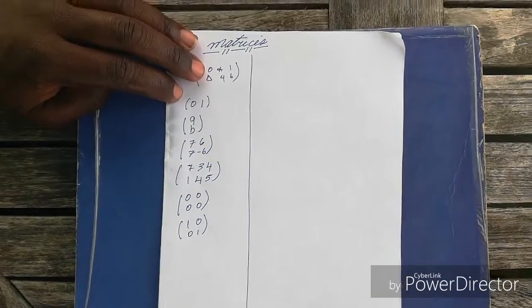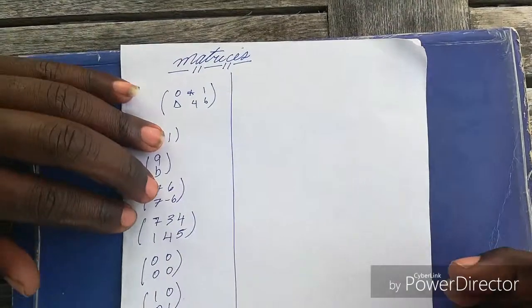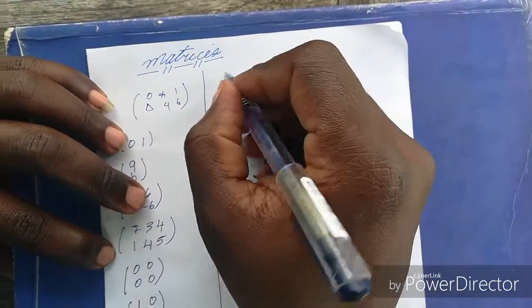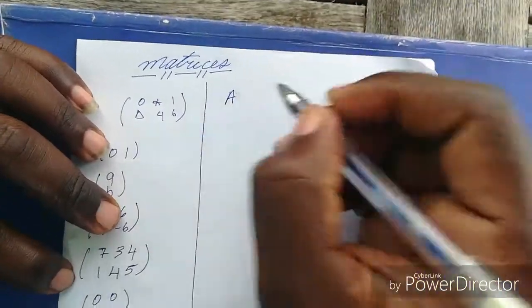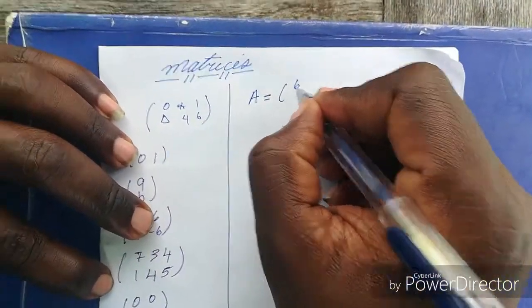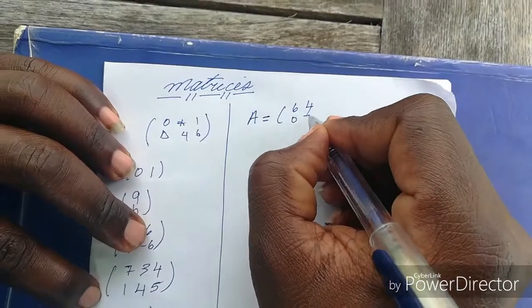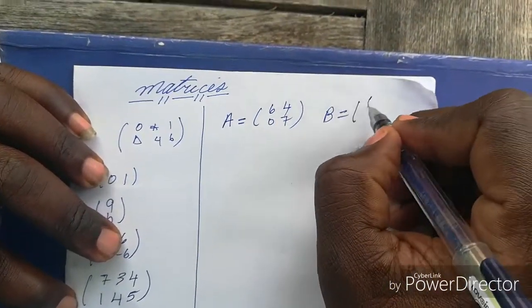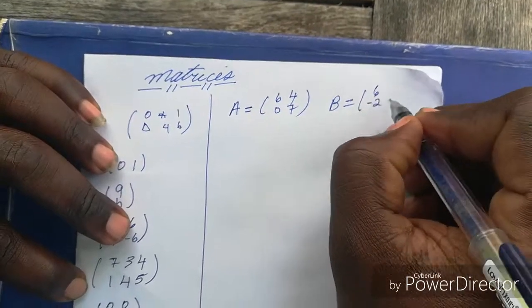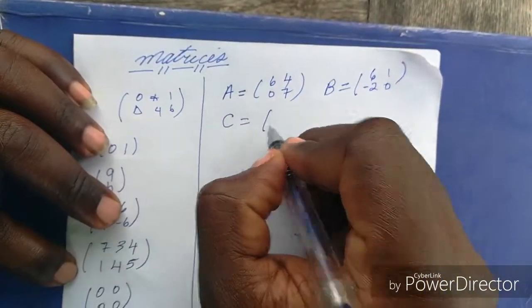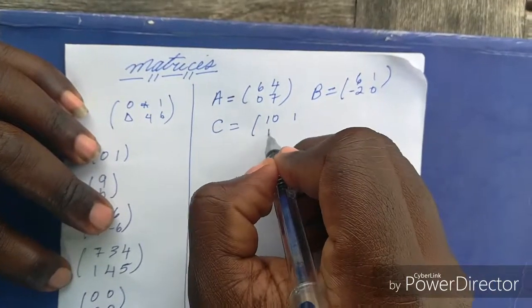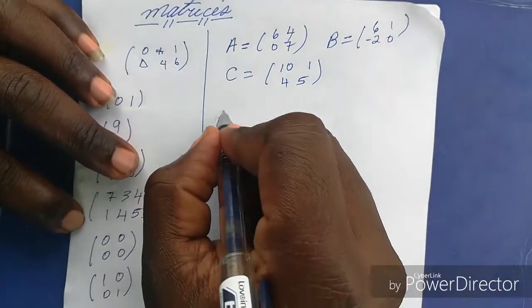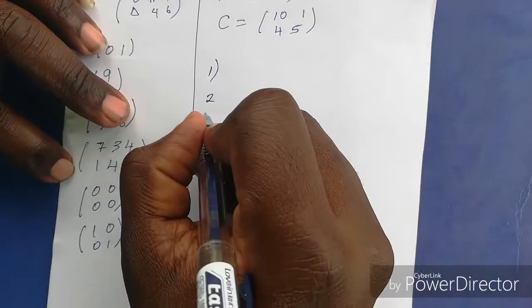There are three matrix operations: there's addition, subtraction, and multiplication. Matrices are noted with capital letters. So let's say we have these matrices here: A is (6, 4), (0, 1), and matrix C is (10, 1), (4, 5), and we're asked to do a series of operations.